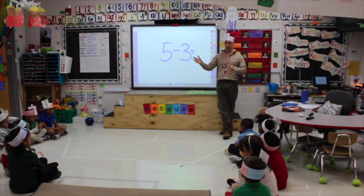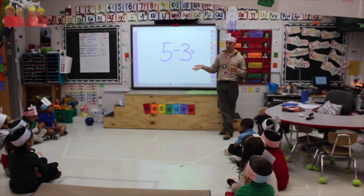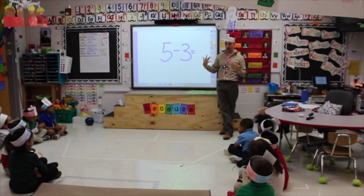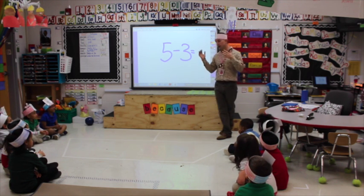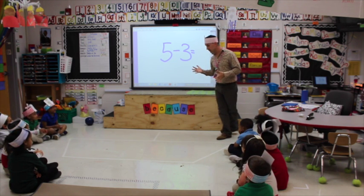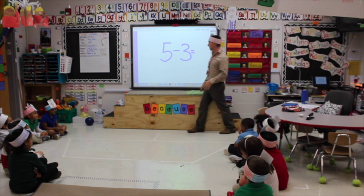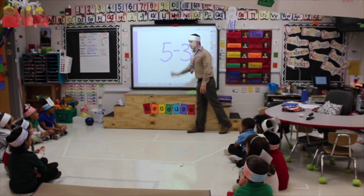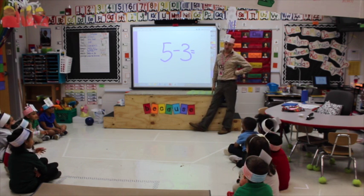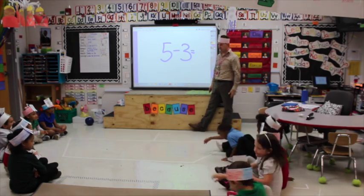So here is our boat. Some people are going to get on the boat, and some of you are getting off the boat. So how many people need to get on my boat? Five. One, two, three, four, five.